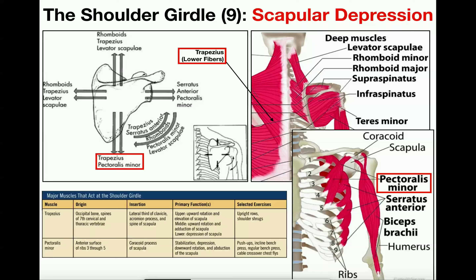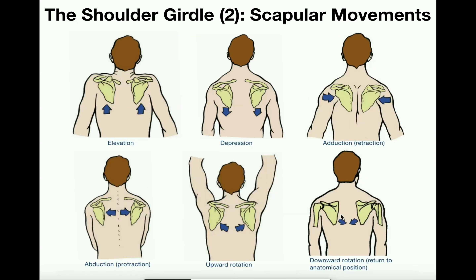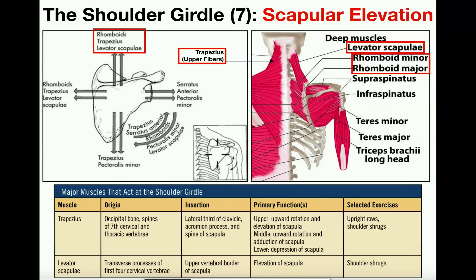Remember that elevation and depression can occur independently of the shoulder joint, but anytime you have a shoulder joint movement — whether flexion, extension, abduction, or adduction — you must have a corresponding scapular movement. Upward and downward rotation weren't covered much here because we'll return to those when we discuss shoulder joint abduction and adduction. In the next video, we're going to talk about shoulder abduction and adduction. Please make sure to like this video and subscribe to my channel for future videos and notifications. Thank you very much.